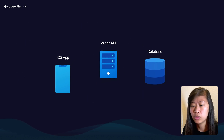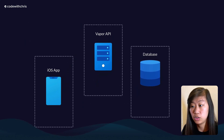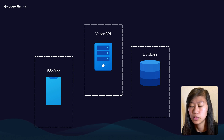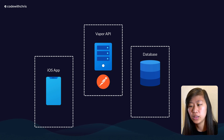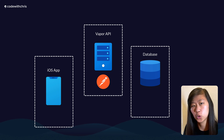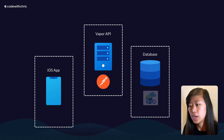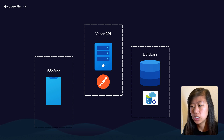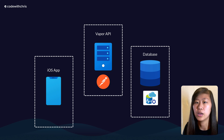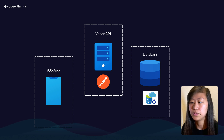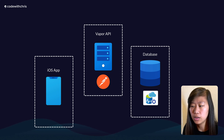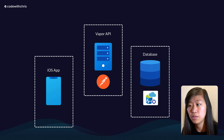So we had to download Homebrew, which is a package manager we used to download everything else. We had to download Postman, which allows us to test the API without actually needing to create the iOS app first. And with the database, we are going to be using Azure Data Studio or possibly DBeaver, which allows us to look at the data directly in the database without having to use our API.